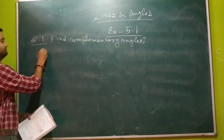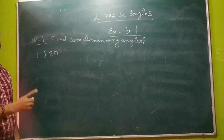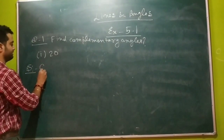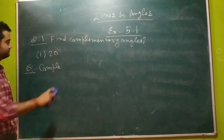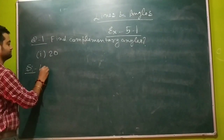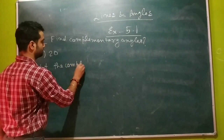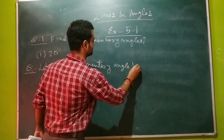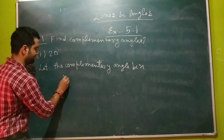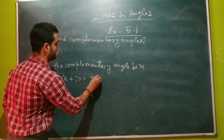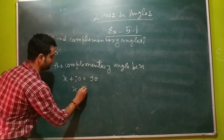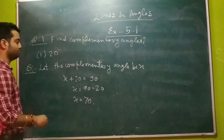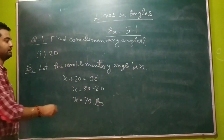The first question is 20 degrees. We have to find out the complementary angle of 20 degrees. For the solution, let's suppose the complementary angle of 20 degrees is x. The sum of x and 20 degrees will be 90 degrees, as you have seen in our previous videos. So the value of x will be 90 minus 20, which gives us 70 degrees. So the complementary angle of 20 degrees is 70 degrees.